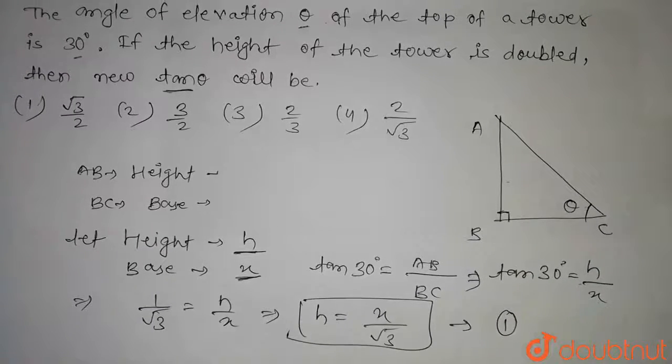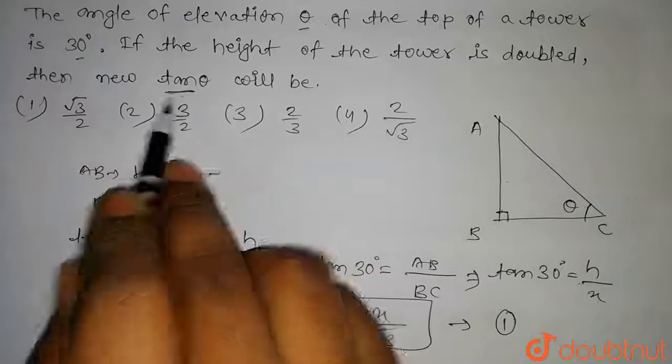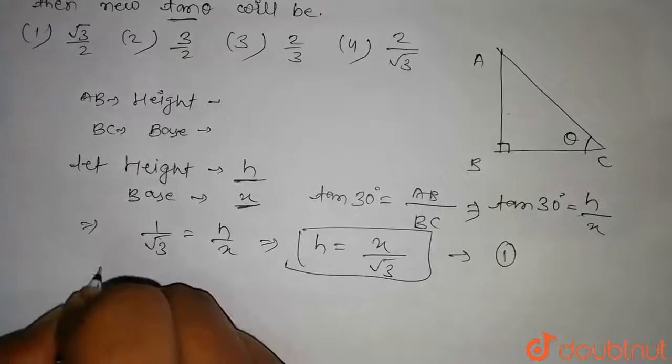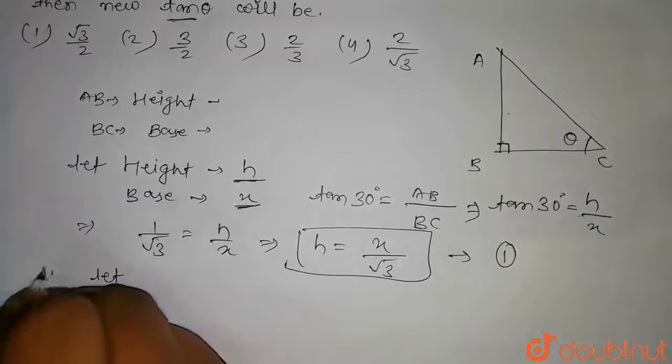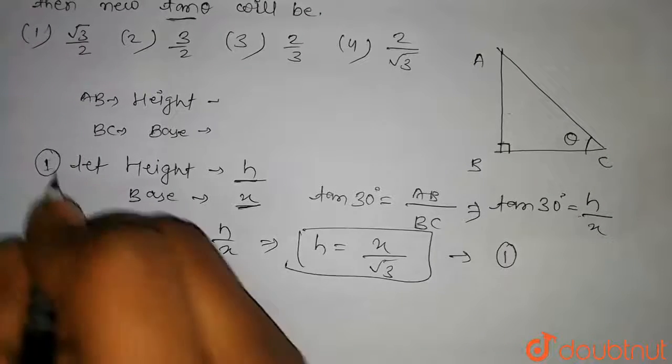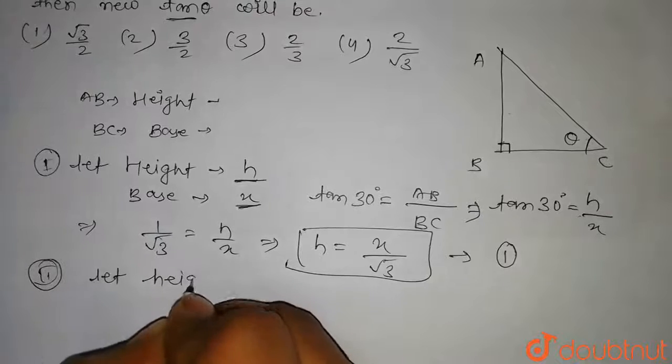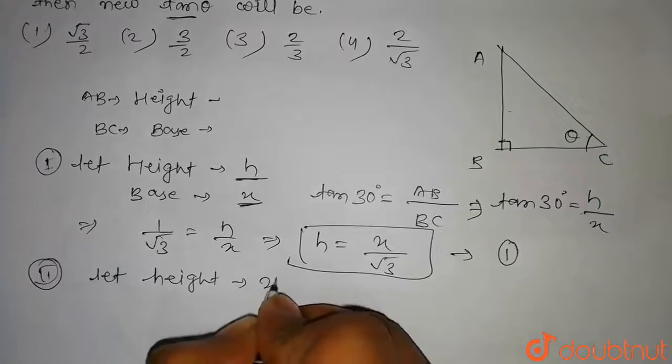Now in the question, it is said if the height is doubled, then we have to find tan theta. So in the second case, this is our first case. In the second case, let height equal 2h.